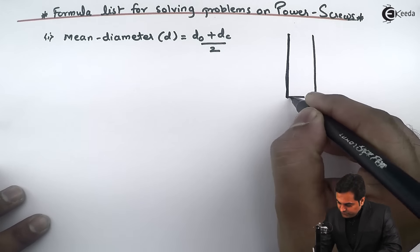The second formula is tan alpha equals P upon pi D, that is pitch upon pi D. How this formula is there, I can explain it with a small diagram.